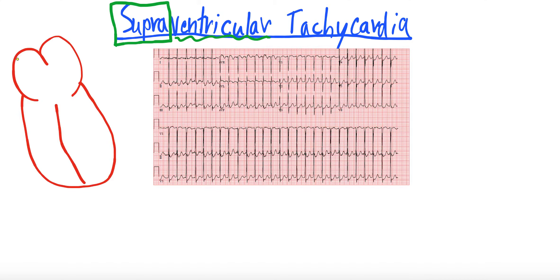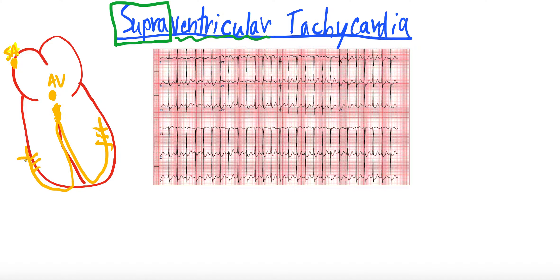Here's our heart. We have two atria and two ventricles. The conduction system of the heart has our SA node, then we have our AV node, and then we have our bundle of His, which goes into the right and left bundle branches, all the fascicles, et cetera. So supraventricular essentially means it's arising above the bundle of His — northward of the bundle of His.